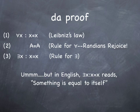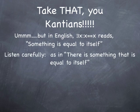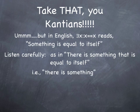But in English, there exists x such that x equals x reads: something is equal to itself. So listen very carefully here. Something is equal to itself. That means there is something that is equal to itself, i.e., there is something. So yeah, that's how we proved it. That's a proof that there is something.